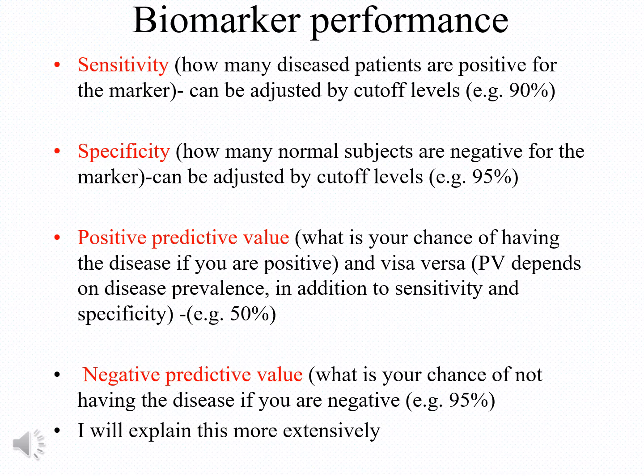Since biomarkers are used in medicine, they have attributes that are very important in showing how good these biomarkers are. One of these attributes is called sensitivity, defined as how many disease patients are positive for the marker out of all the disease patients. For example, if you have 100 patients with cancer and the test is positive in 90% of them, the sensitivity of the test is 90%.